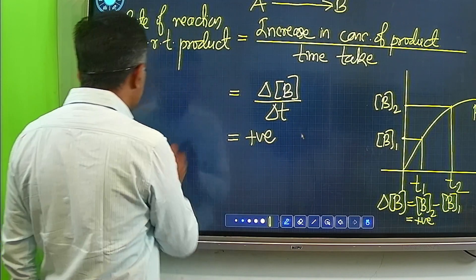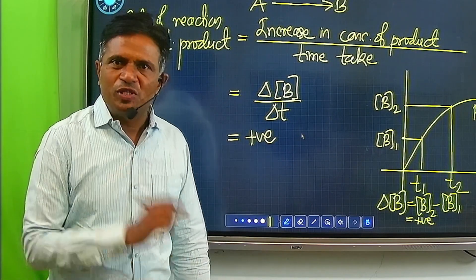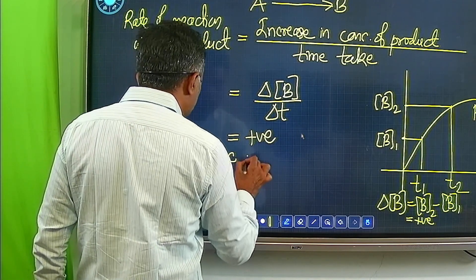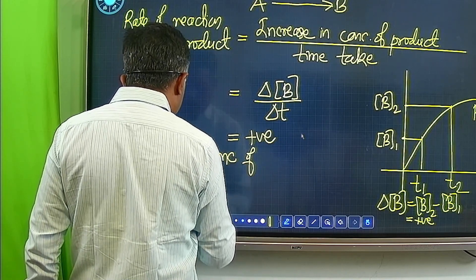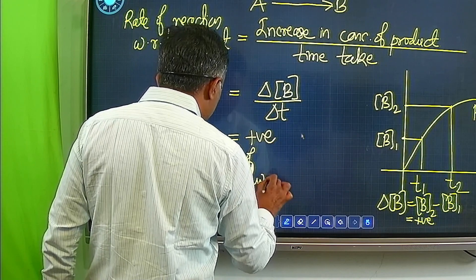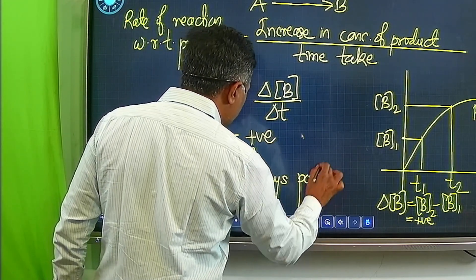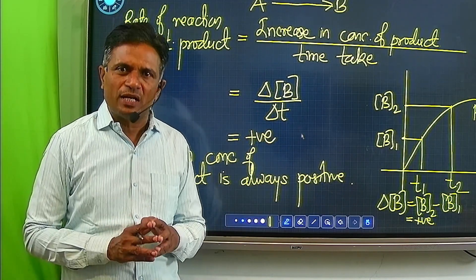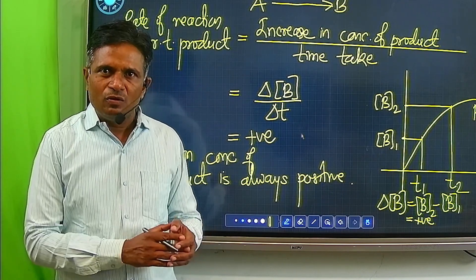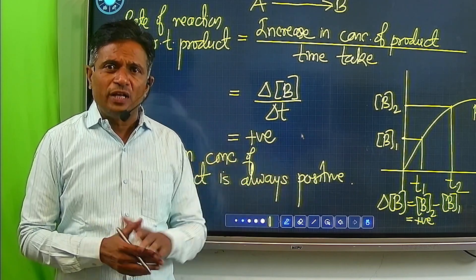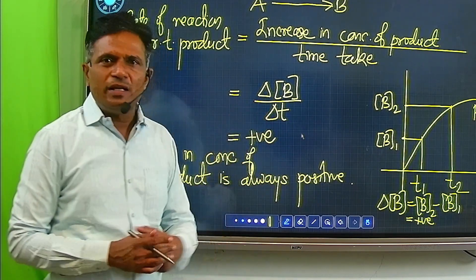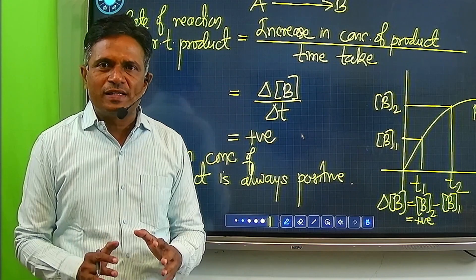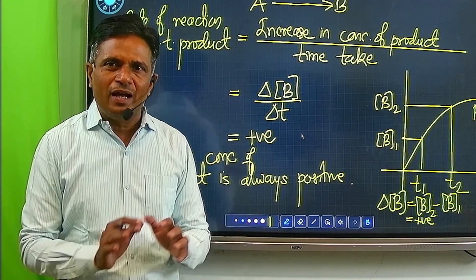The rate of reaction is always positive, and the change in concentration of product is always positive. That is the difference: while expressing the rate of reaction with respect to reactant, we always put a negative sign, but with respect to product it is not necessary to write the negative sign, because concentration of product increases with time.